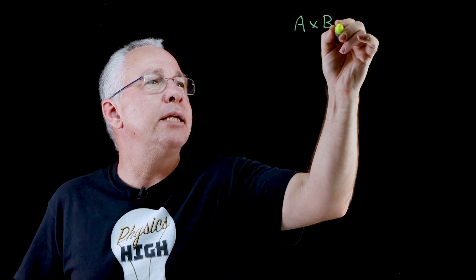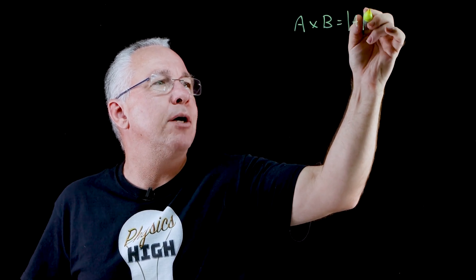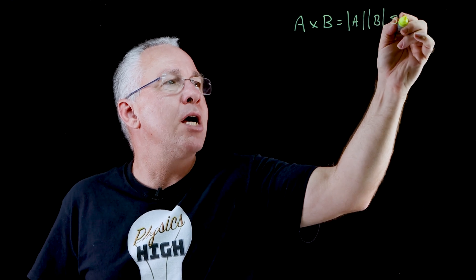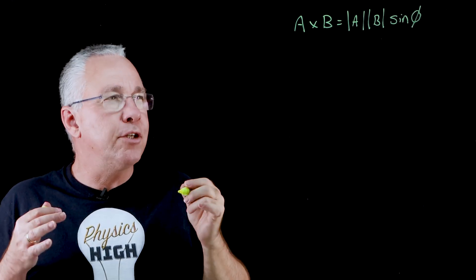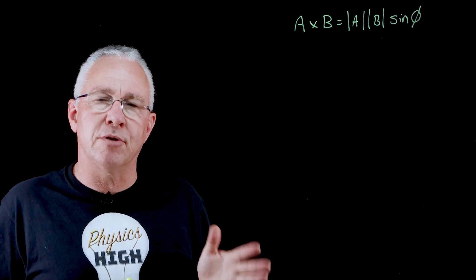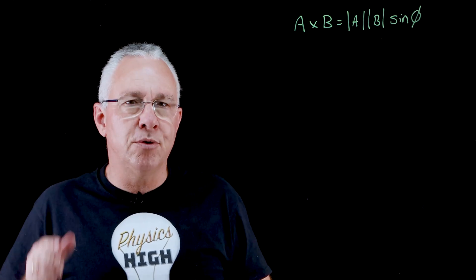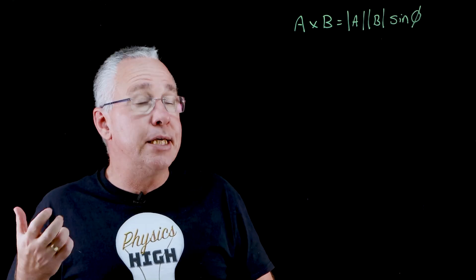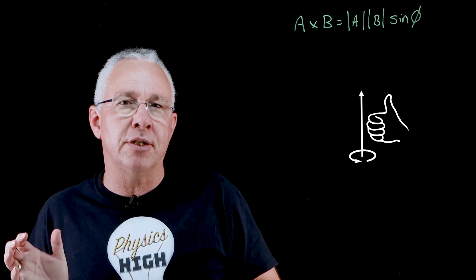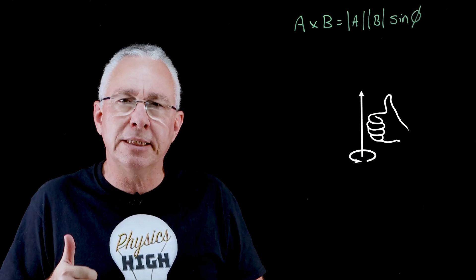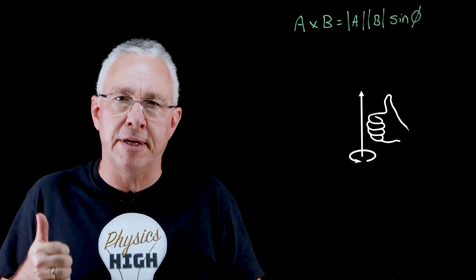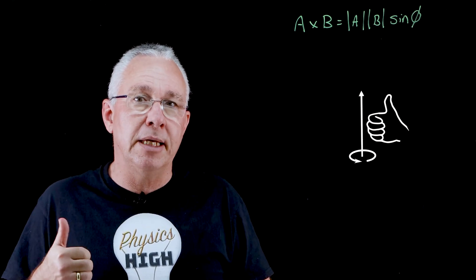In the cross product, the formula is written as a × b, and it equals the magnitude of a multiplied by the magnitude of b multiplied by the sine of the angle φ between them. The direction is determined by the right-hand rule: curl your fingers from vector a toward vector b, and your thumb points in the direction of the resultant vector — in this case upward.